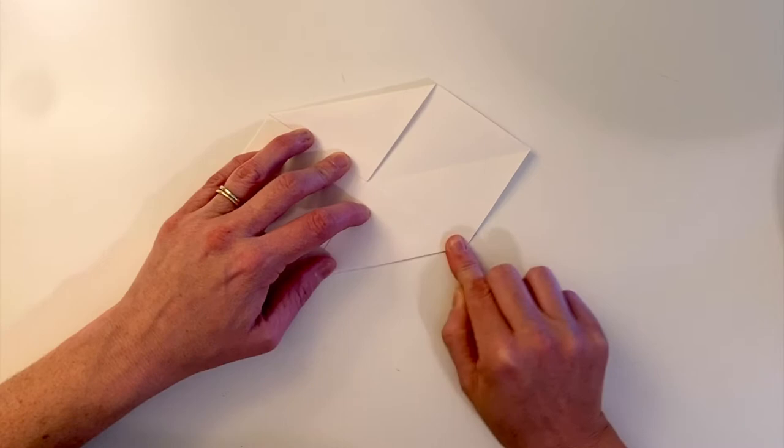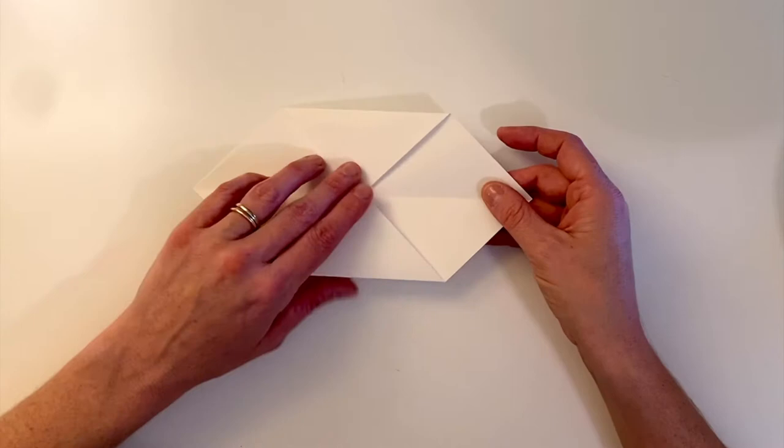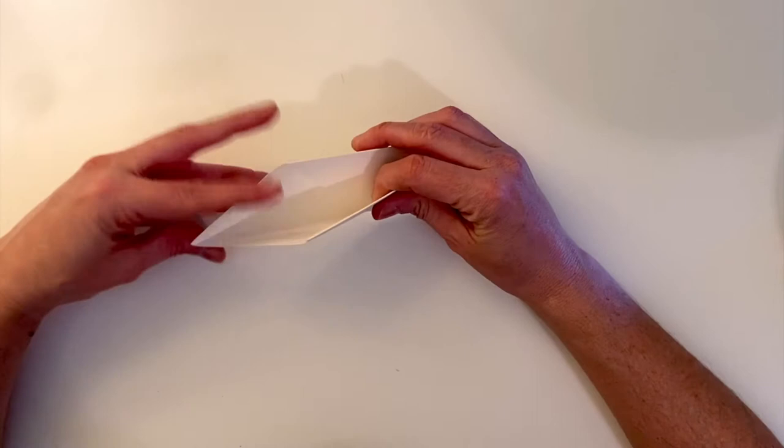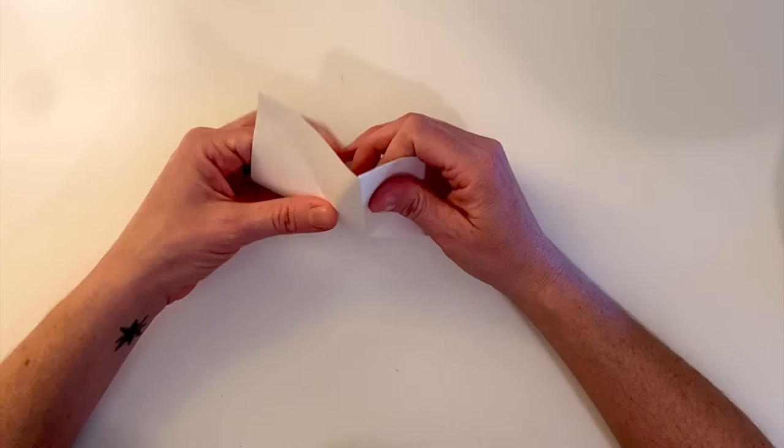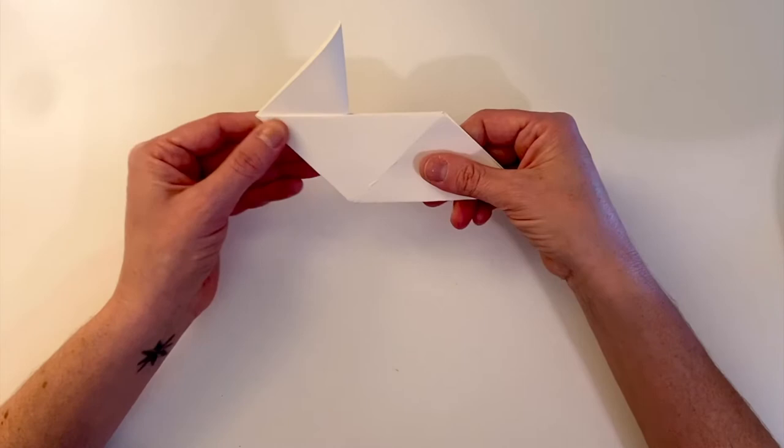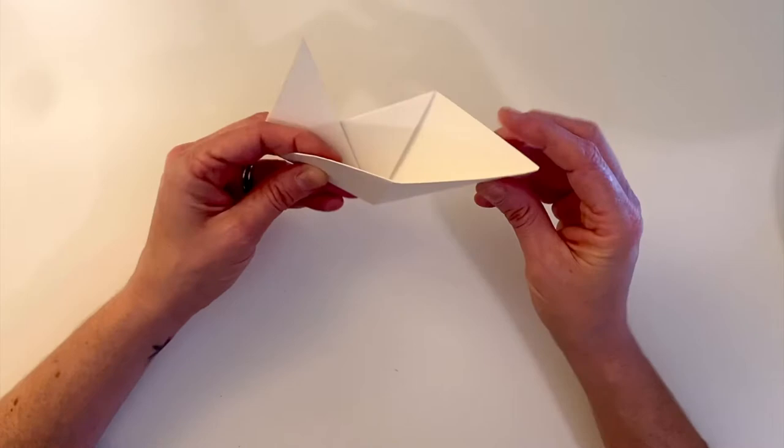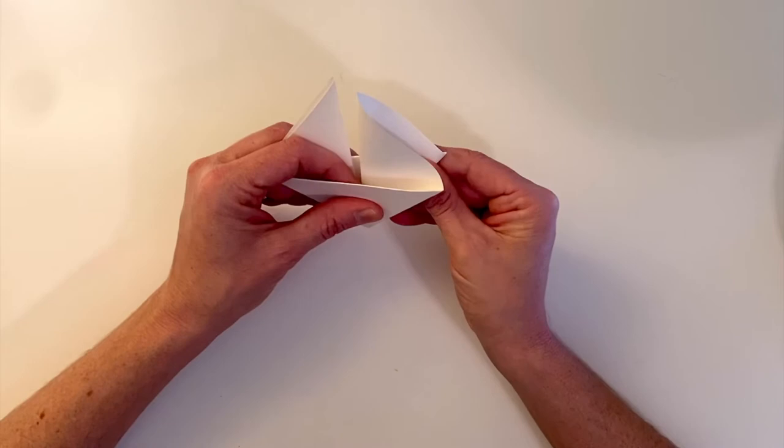Now we're going to fold it in half. So now it looks like this. Now we're going to open it a little bit and you're going to push in one side. It's almost like closing a cardboard milk carton. And you can press along the crease of your sail. And we're going to do the same thing on the other side. So you just press it in. Now we have two sails.